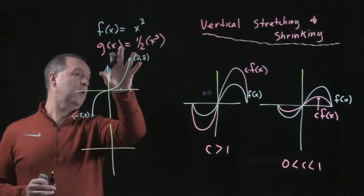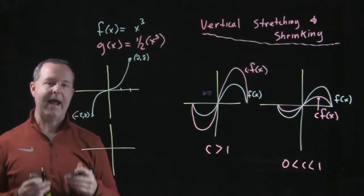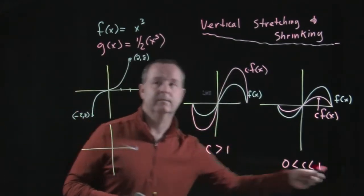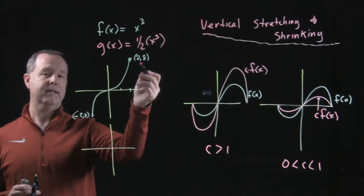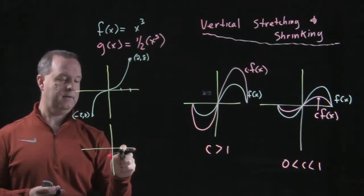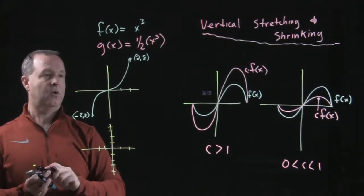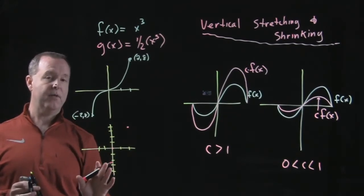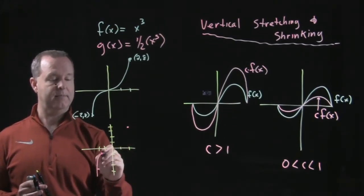We're going to vertically shrink this graph because the constant is less than 1. Every point becomes half the distance from the x-axis. So the point (0, 0) stays. The point (2, 8) is now (2, 4) — half the distance from the x-axis. Likewise, (−2, −8) becomes (−2, −4). See how both points shifted toward the x-axis by half? The graph becomes a little more squashed.